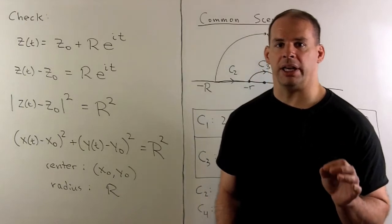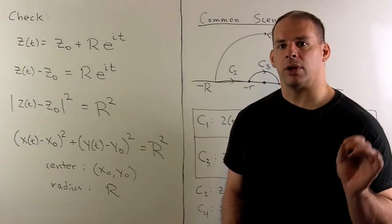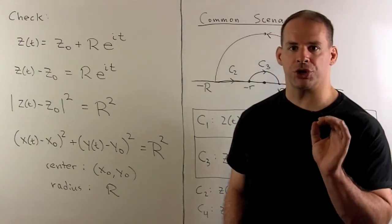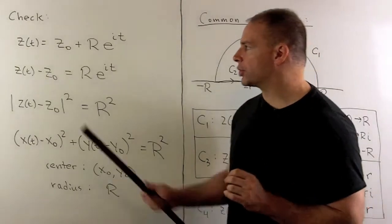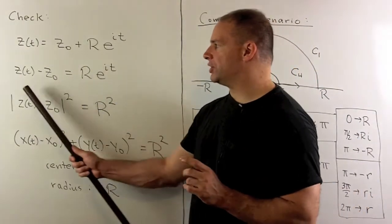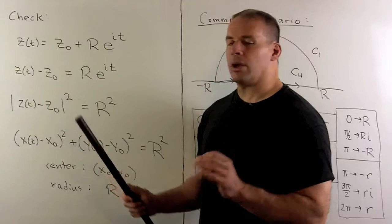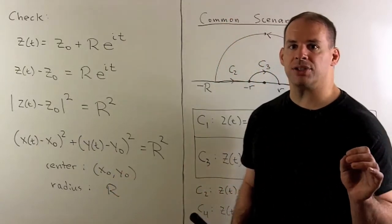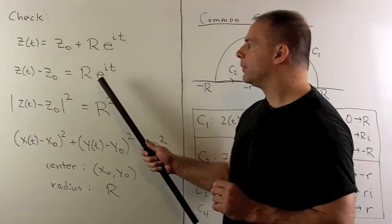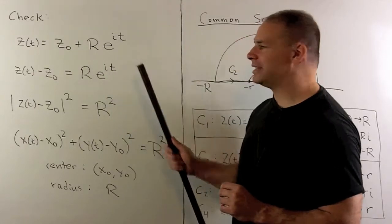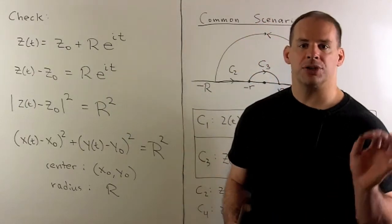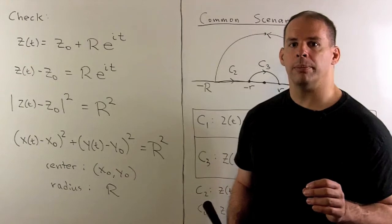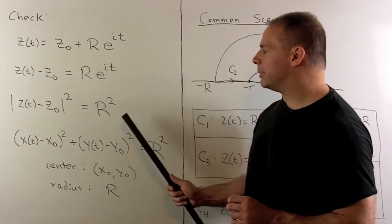Because seeing is believing, let's just check that our equation returns a formula for a circle. Here's our equation. Push the z zero to the other side. I'm going to take the modulus squared of both sides. On the right-hand side, R is a real number. E to the it is on the unit circle. So its modulus is equal to one. So the modulus squared is going to be R squared.